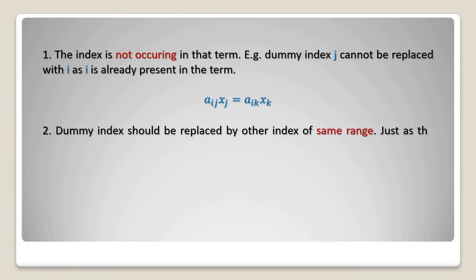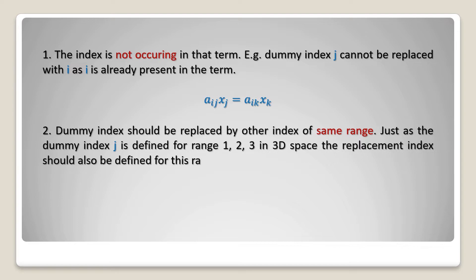A dummy index should be replaced by another index of the same range. Just as the dummy index j is defined for range 1, 2, 3 in 3D space, the replacement index should also be defined for this range.